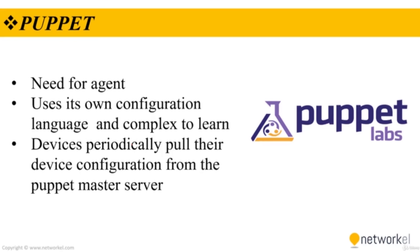Puppet is another open source automation tool that was initially used for managing Linux servers but is also gaining popularity in the network automation world. As with Chef, it requires an agent to be installed on the target device. Puppet uses its own configuration language, which is completely proprietary, making Puppet more complex to learn than Ansible or Chef.